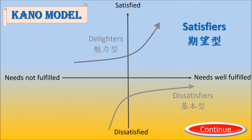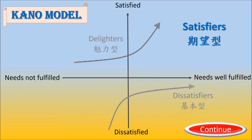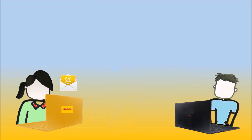Level 2: Satisfying customer expectations. Satisfiers are standard features of a product or service. The more satisfiers there are, the more satisfied customers become.